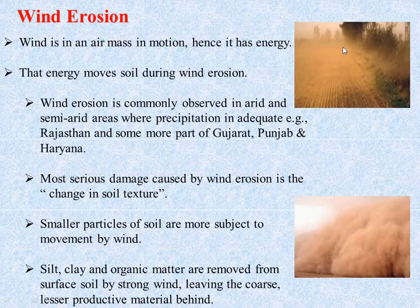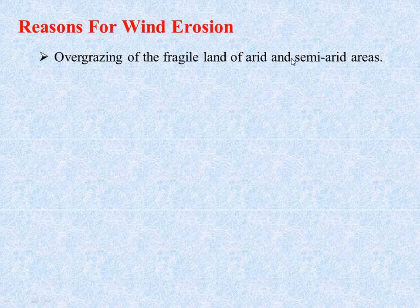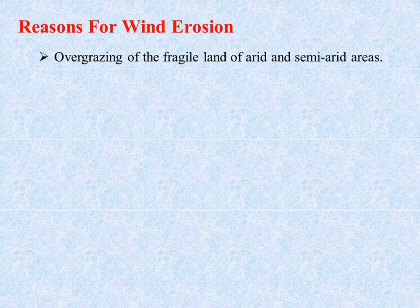The wind erosion takes place as shown in the figure. The different reasons for wind erosion include overgrazing of fragile land in semi-arid areas and dry regions like deserts, inland rivers, sand with strong wind and no obstacles.